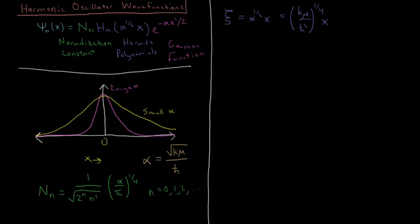So what are the values of these for some given values of n? Well, h0 of xi is just equal to 1. So the lowest energy solution of the harmonic oscillator is just a Gaussian. Gaussian times 1, so it's going to be just a Gaussian sitting near the bottom of the well at x equals 0.